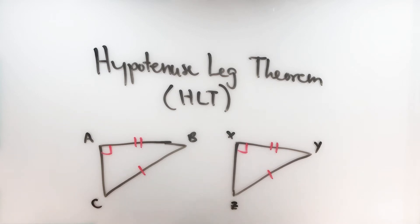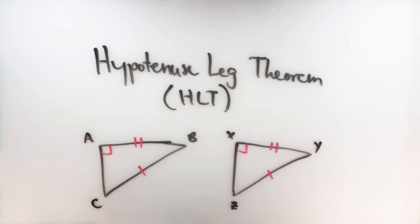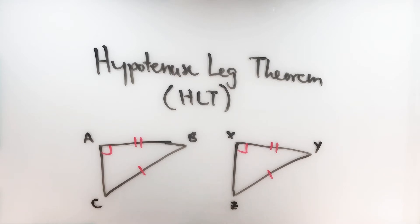You'll probably notice that this is technically a situation where you have angle-side-side. You may recall that in general, side-side-angle is not sufficient to prove two triangles are congruent. Well, there is one exception, and that's this situation — if the angle is a right angle, this will be sufficient to prove the two triangles are congruent. If you want to know why side-side-angle isn't quite enough, check out that video on this channel as well.